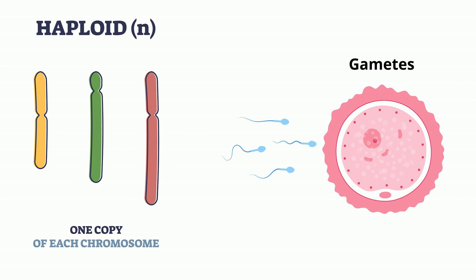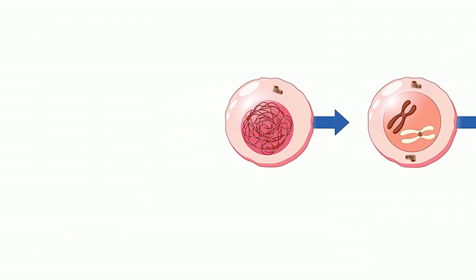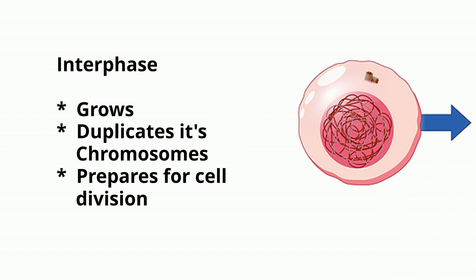Both mitosis and meiosis go through interphase. A cell spends most of its time in what is called interphase, and during this time it grows, replicates its chromosomes — in other words, makes a copy of its DNA — and prepares for cell division.